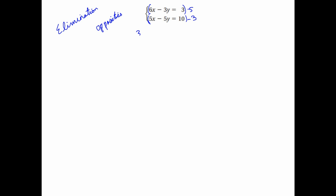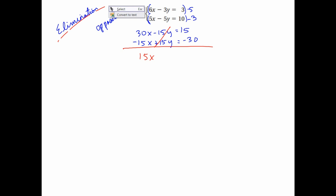If I multiply 6 by 5, I get 30x. And then negative 3 times 5 gives me minus 15y. And 3 times 5, I get 15. Now on my next equation, 5 times negative 3 gives me minus 15. And negative 5 times negative 3 — two negatives make a positive — so that's positive 15. And 10 times negative 3, that's negative 30. Notice how right here I got opposites. So what we want to do next is combine straight up and down: 30x minus 15x gives me 15x. Negative 15y plus 15y cancels out — that's exactly the elimination we wanted. Equals 15 minus 30, which gives me negative 15.